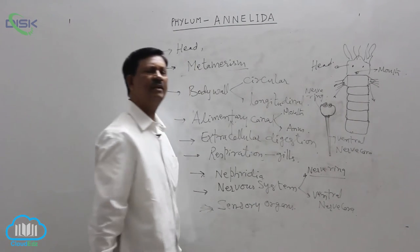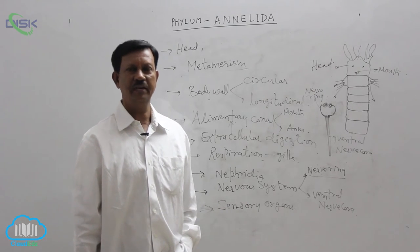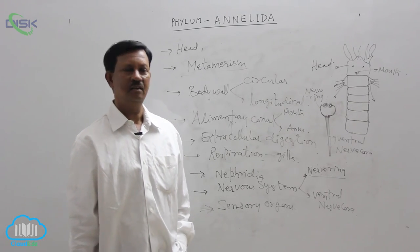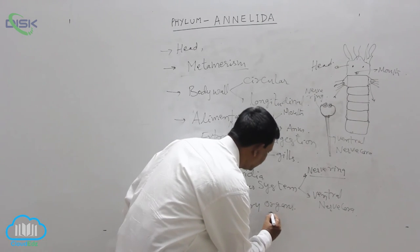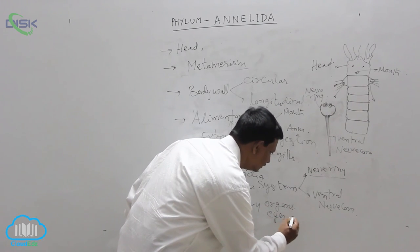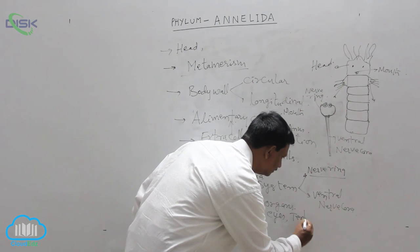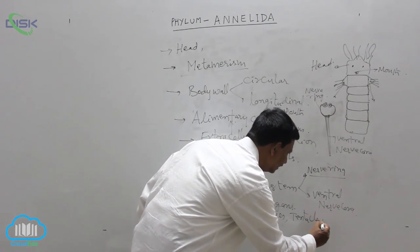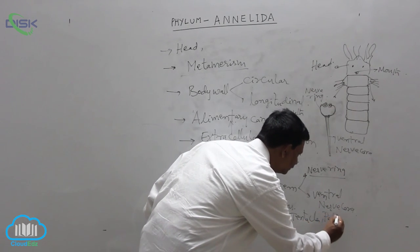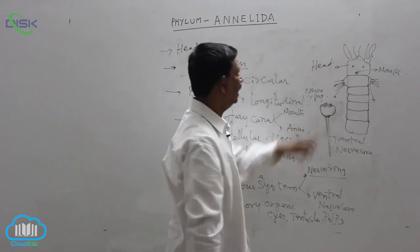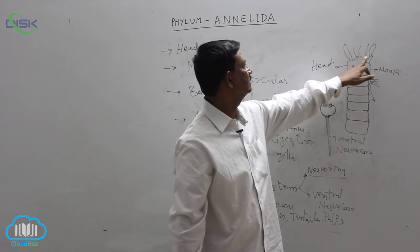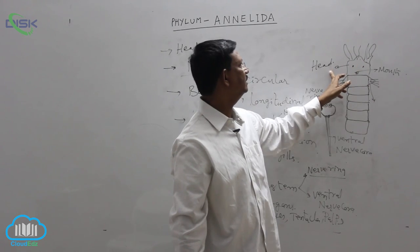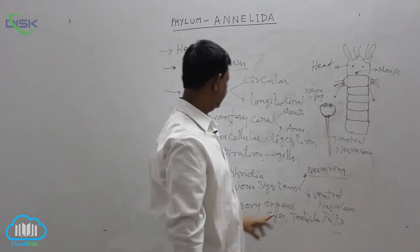Sensory organs. There are different types of sensory organs present in free living forms as well as in parasitic forms. The main are eyes, tentacles and palps. These are accumulated in the anterior region of the body in the head region.